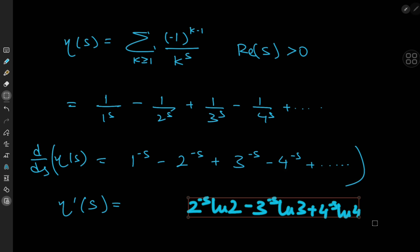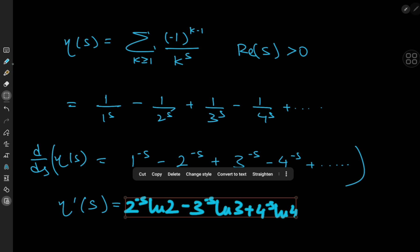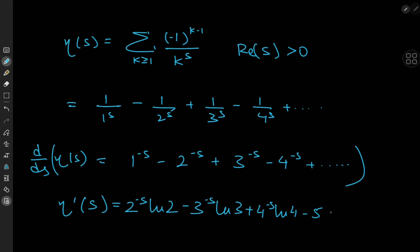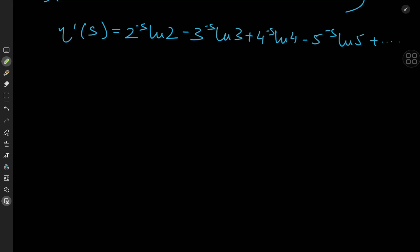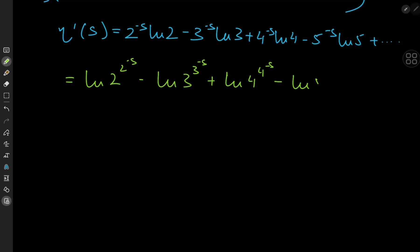Writing one more term, we also have minus 5^(−s) log 5, and so on. Using properties of the logarithm to simplify the right-hand side, all the coefficients turn into exponents of the argument: log(2^(2^(−s))) minus log(3^(3^(−s))) plus log(4^(4^(−s))) minus log(5^(5^(−s))), and on we go.